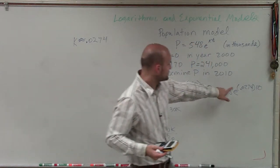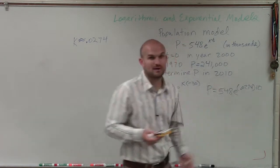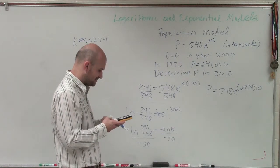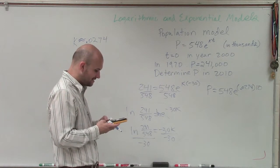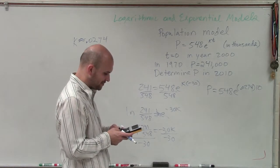So now to find P, I'm just going to take e, raise it to my k times 10, and then multiply that by 548. So I take k, multiply it by 10, then take e and raise it to that value, and then multiply that by 548.